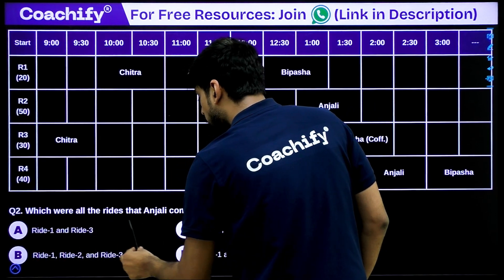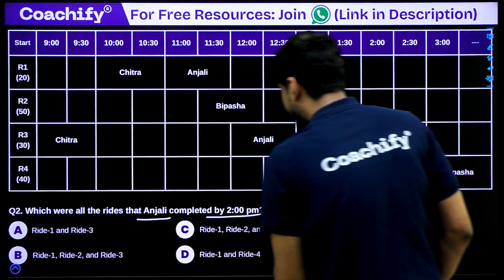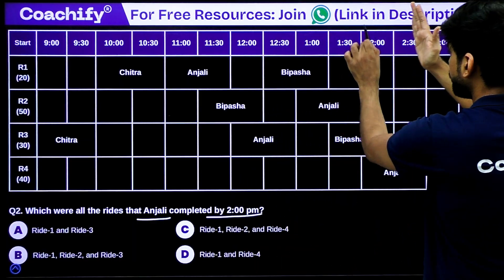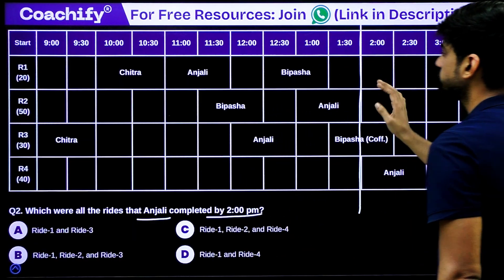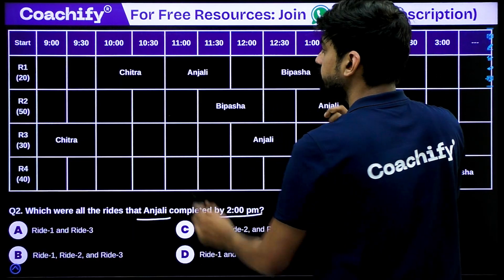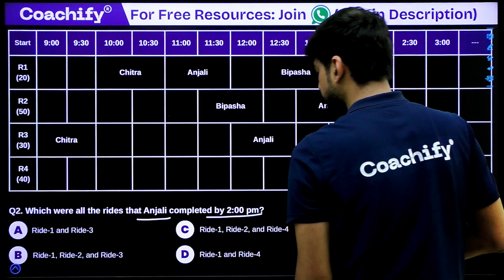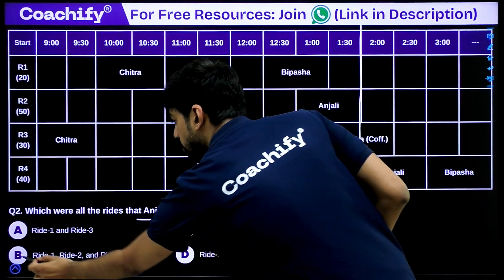Question 2: Which rides did Anjali complete by 2 p.m.? Looking at Anjali's schedule up to 2 p.m.: she took ride 1 (11 to 12) and ride 3 (12 to 1). So Anjali completed rides 1, 2, and 3 by 2 p.m. The correct answer is option B.